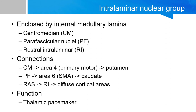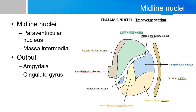These connections are worth memorizing as board exam questions have been encountered on this topic. The midline nuclei are located more medial than the dorsal medial nucleus, and include the massa intermedia, also known as the interthalamic adhesion, and the paraventricular nucleus. It is not critical to know the specific details of these nuclei, but know that they are in the midline and involved in nonspecific projections to the cortex within the limbic system.